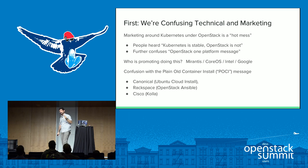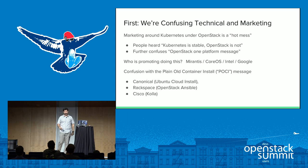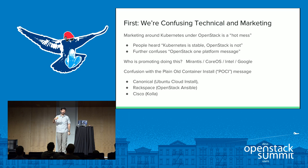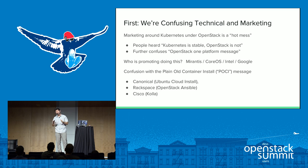My first and biggest concern is that the marketing around Kubernetes under OpenStack is a hot mess. When we announced at the Austin summit Kubernetes under OpenStack, the message that got out was 'Kubernetes is stable, OpenStack is not.' It confuses OpenStack's one-platform message — the official message is one platform for metal, VMs, and containers — and it's confusing when you start throwing things under that platform.